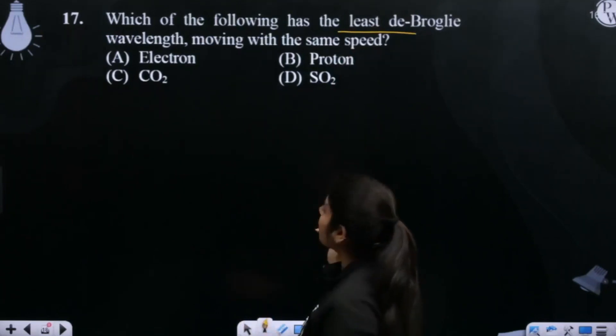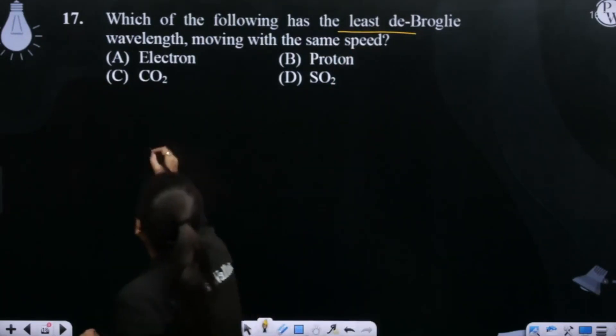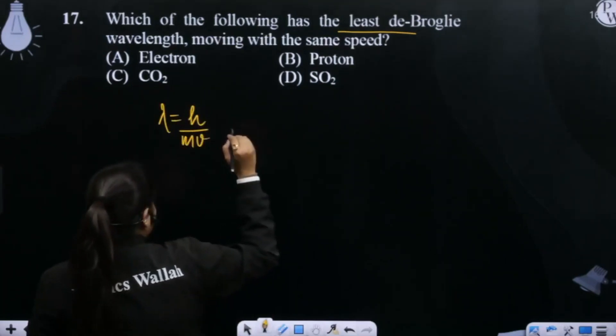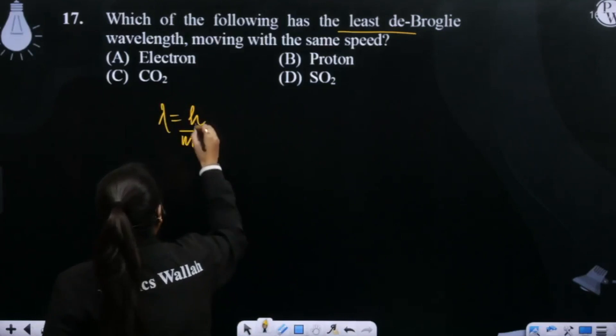What is the speed of all these? It is the same. So de Broglie wavelength is h upon mass into velocity. Now it is the same speed.